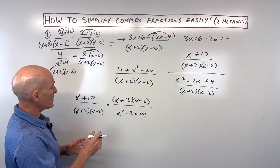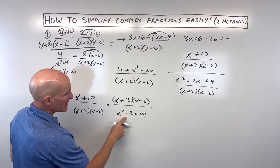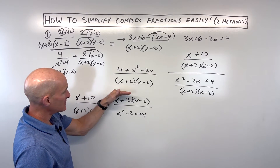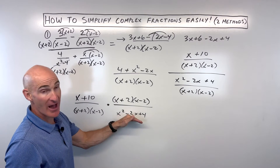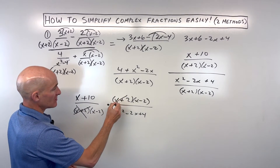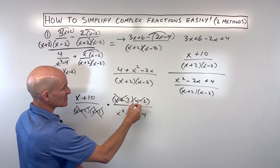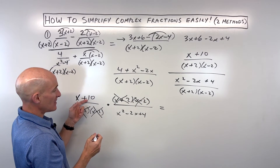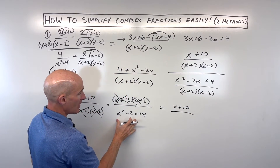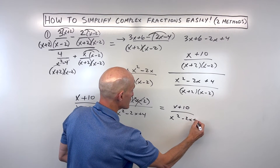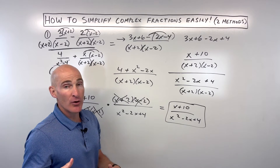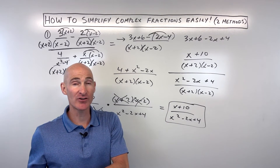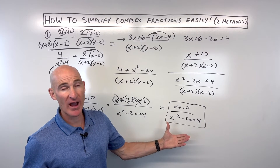So I'm going to take the fraction in the numerator, which is x plus ten over x plus two times x minus two. Instead of division, I'm going to write this as multiplication and flip — take the reciprocal of the fraction in the denominator. So this becomes x plus two times x minus two all over x squared minus two x plus four. Now I want to make sure everything is factored. We can reduce top and bottom, or on the diagonals. The x plus two's cancel top and bottom, and same with the x minus two's. Multiplying horizontally, that gives us x plus ten in the numerator divided by x squared minus two x plus four. We've gotten rid of the complex fraction — just one fraction bar. That's method number one.